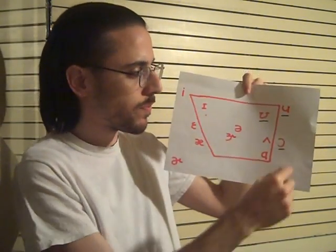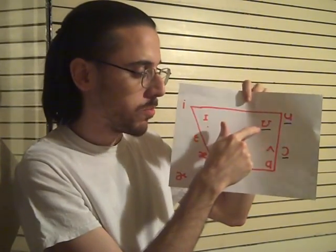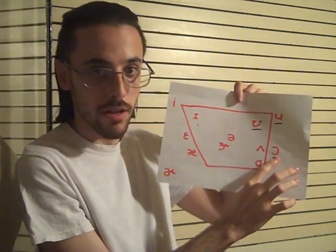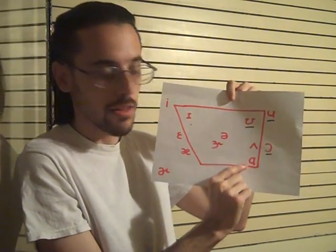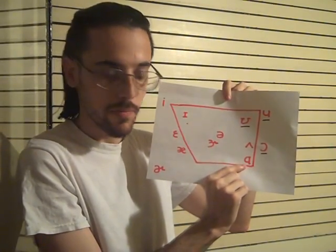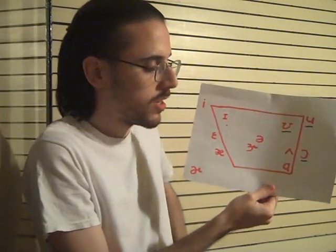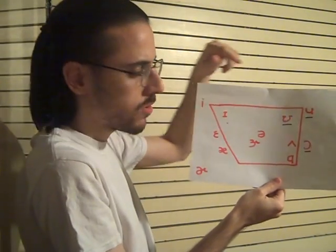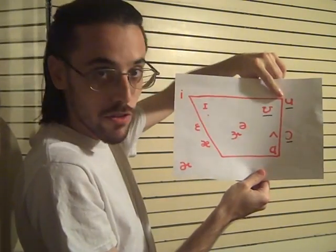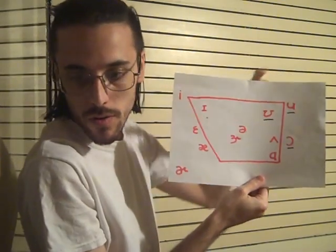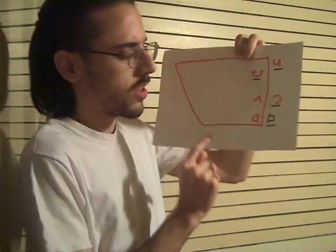Then we have the back vowels, which is what I want to talk about. We have the 'pool' vowel, 'put' vowel, 'duck' vowel, 'not' vowel, and 'father' as in farm, etc. The ones that are underlined are distinguished by being rounded. Let's take a look at just the back vowels.